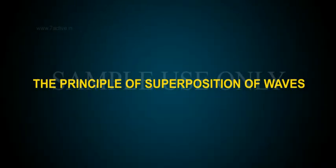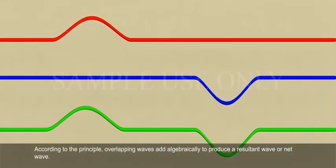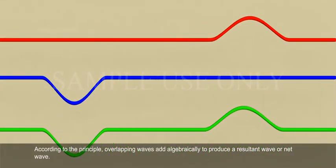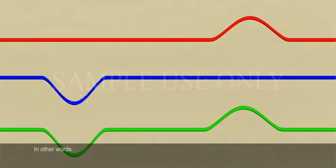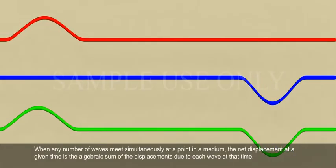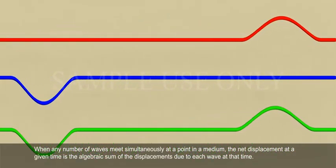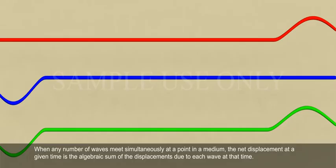The Principle of Superposition of Waves. According to the principle, overlapping waves add algebraically to produce a resultant wave or net wave. In other words, when any number of waves meet simultaneously at a point in a medium, the net displacement at a given time is the algebraic sum of the displacements due to each wave at that time.